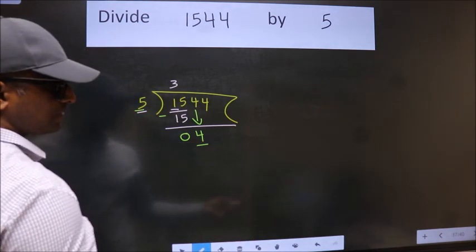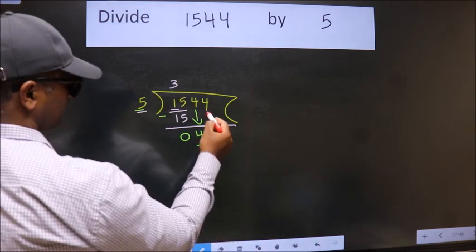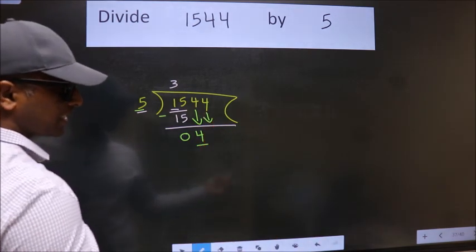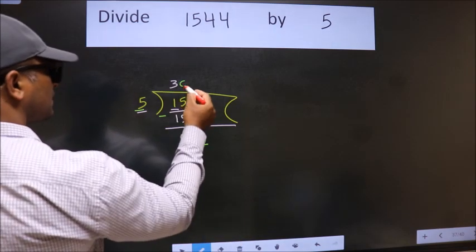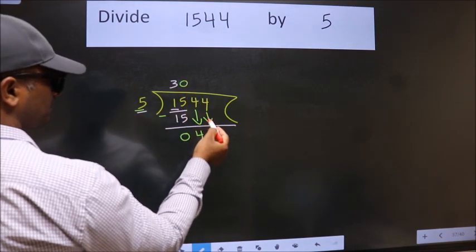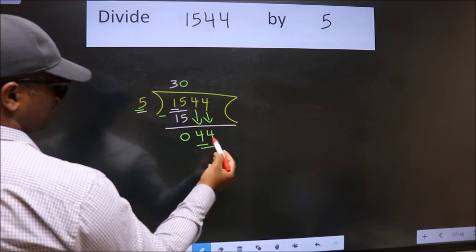4 is smaller than 5. So we should bring down the second number. And the rule to bring down the second number is put 0 here. Then only we can bring this number down. So, 44.